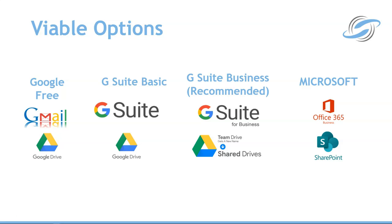I'm going to go through each of these in more detail in a second, but just as an overview: you've got the free Google option, you've got G Suite Basic which is the paid option using the basic version, you've got G Suite Business which is the one I actually recommend — and that includes the shared drives I've discussed many times in this video series. And then you've got the Microsoft option, which is Microsoft Office 365 for Business with SharePoint.